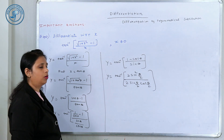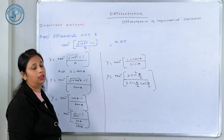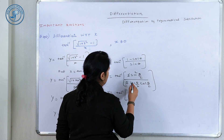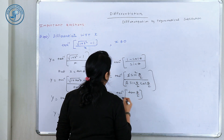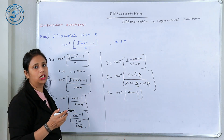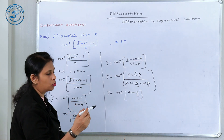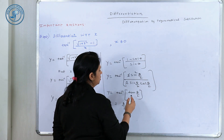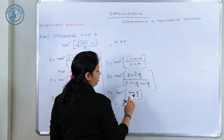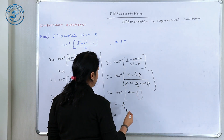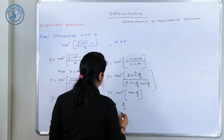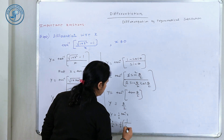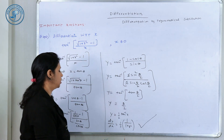If there is confusion, refer to the six formulas from the previous episodes — write them down so they come to mind immediately. So y = tan inverse of tan(θ/2). Since x ≠ 0, θ/2 lies between −π/2 and π/2, which is within the range of tan inverse. So y = θ/2 = (1/2) tan⁻¹ x, and dy/dx = 1/(2(1 + x²)).